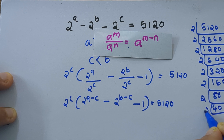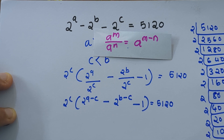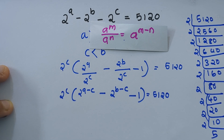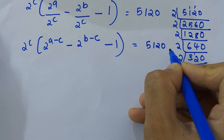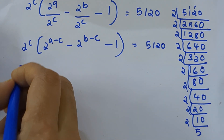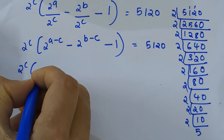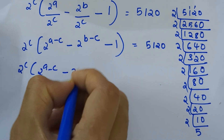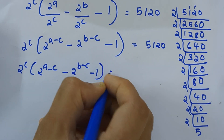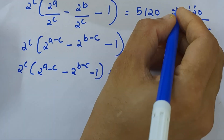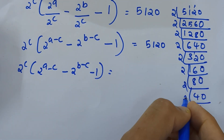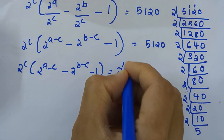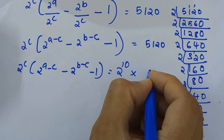Now let us factorize 5120. We can write 5120 as 2 raised to c into 2 raised to a minus c minus 2 raised to b minus c minus 1, equal to 2 raised to 10 into 5.